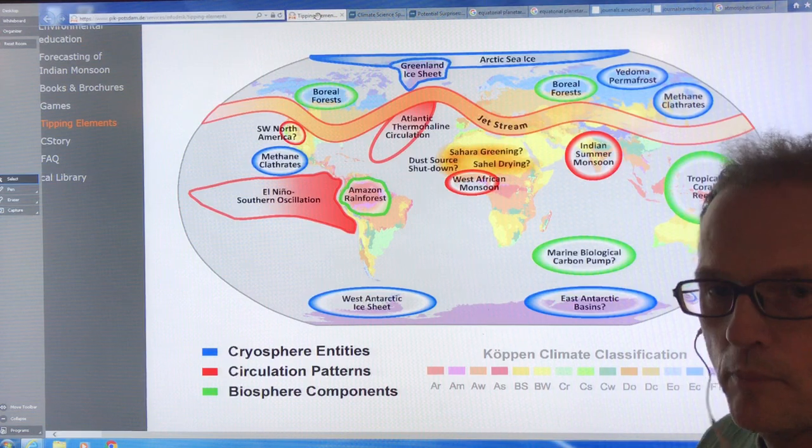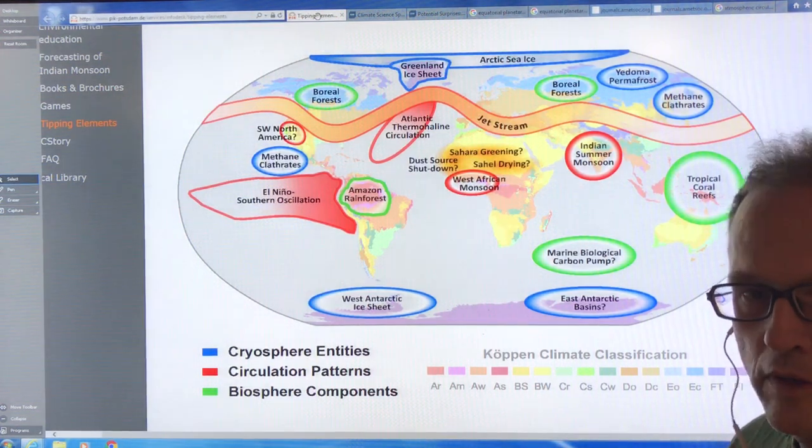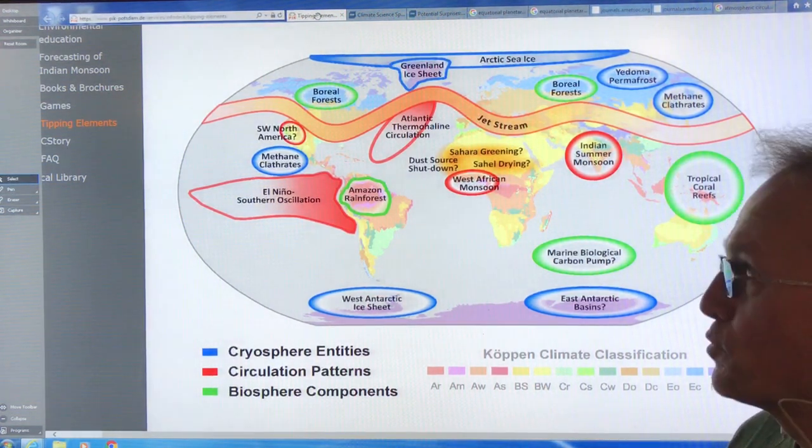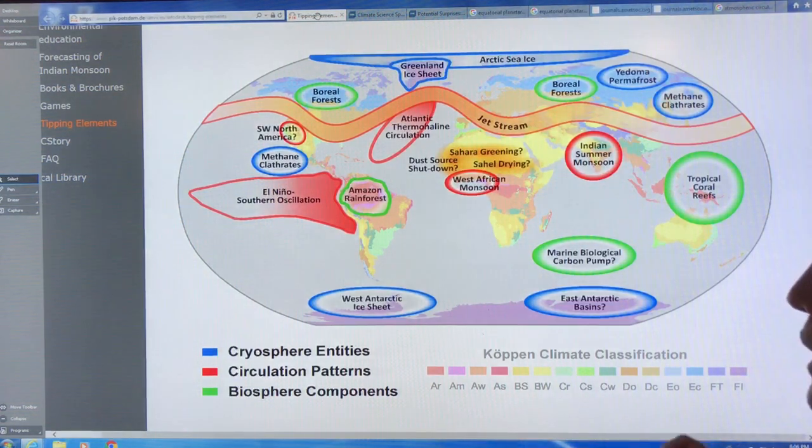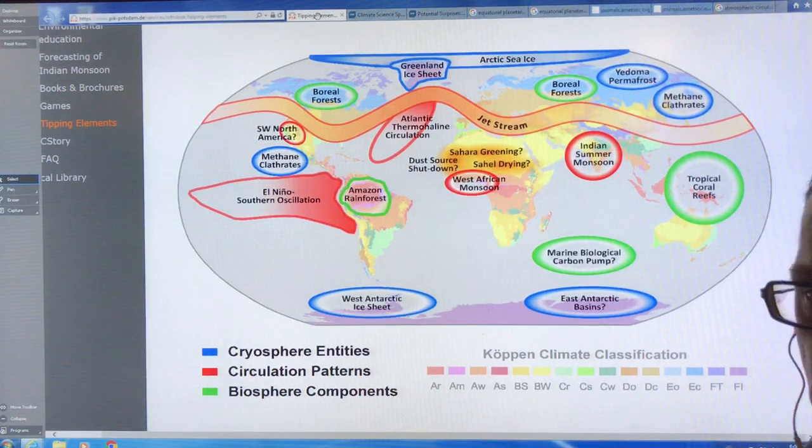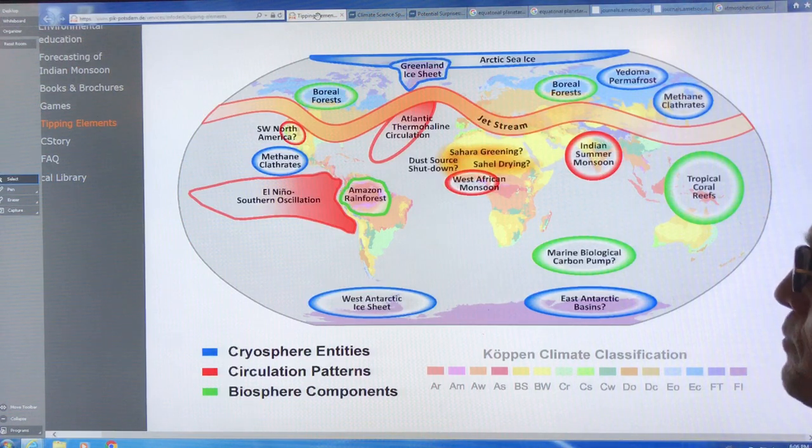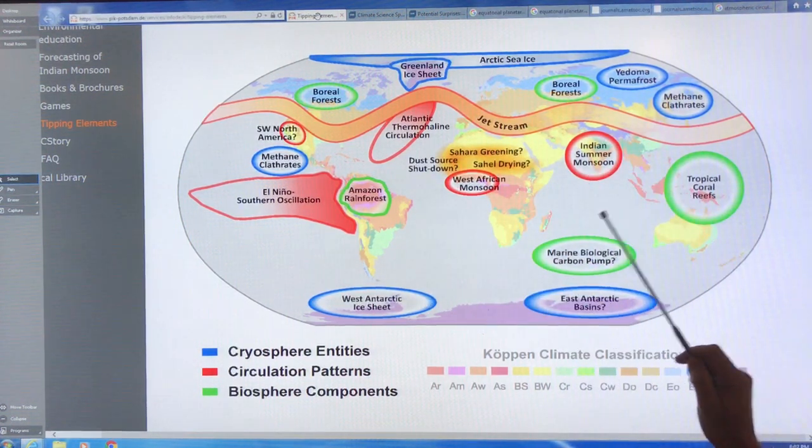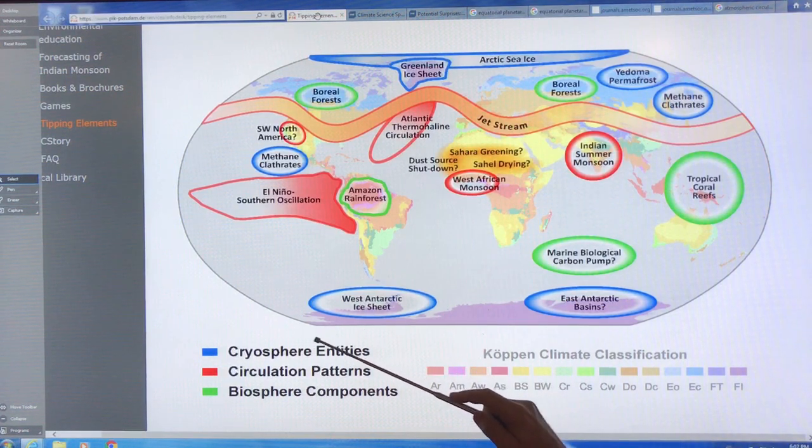I'm going to talk about the tipping points in the earth system and there's many of them. This schematic is from the Potsdam Institute in Germany and it divides up the tipping points in the earth system into three different areas.